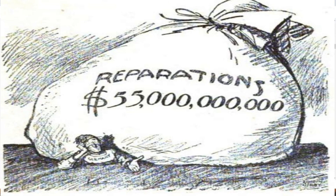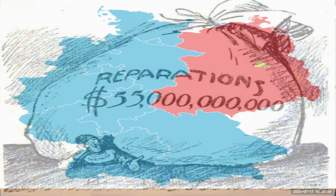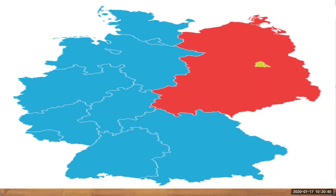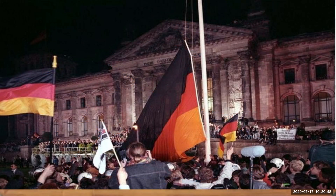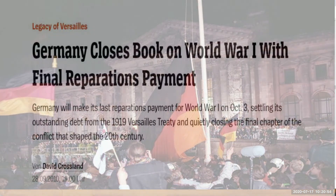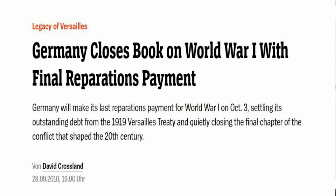Germany reacted very strongly against it. Germany was also divided into Western and East Germany after the Second World War. In 1995, Germany was united once again — there is no East or West Germany anymore. Finally, they settled the loan on 3rd October 2010. So just 10 years back, all this payment was finally paid.